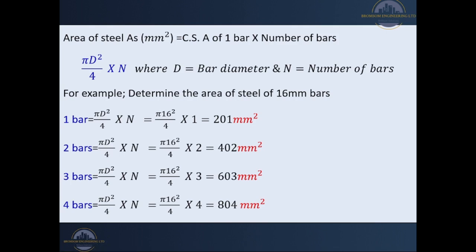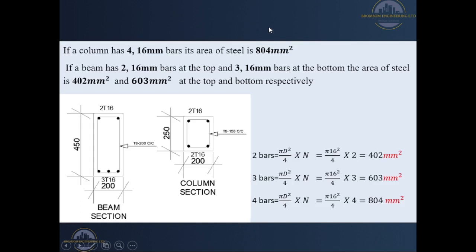From observation, our column had four 16 millimeter bars, meaning their area was 804 mm². The three bars at the bottom of our beam had an area of 603 mm². This is the general formula to use whenever you are determining the area of steel, where d is the diameter of the bar and n is the number of bars. For example, if a column has four 16 millimeter bars, its area of steel is π × 16² / 4 × 4, which gives you 804 mm².